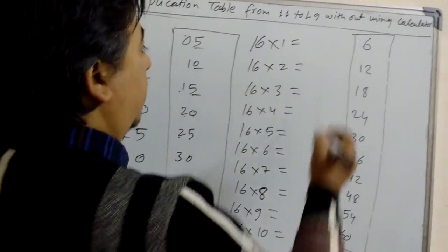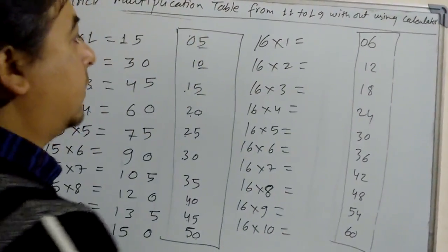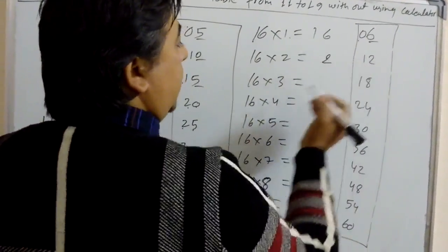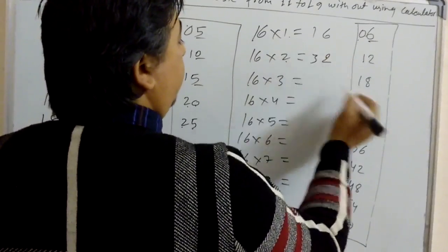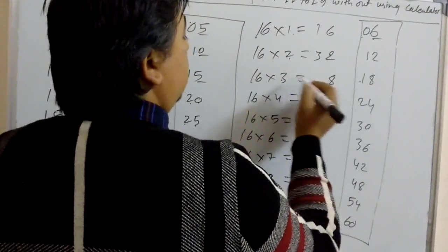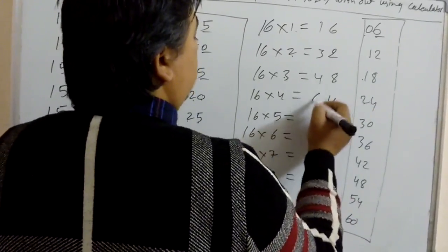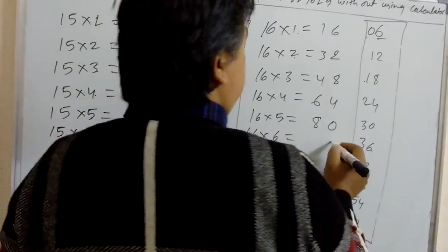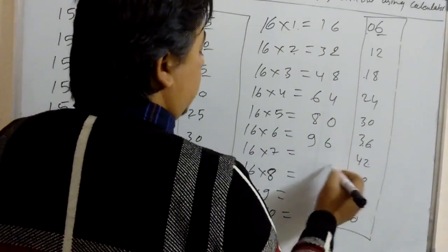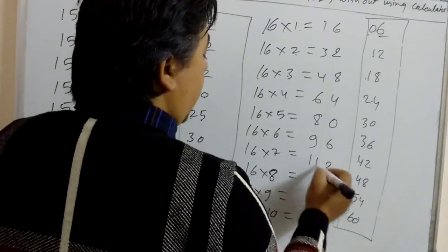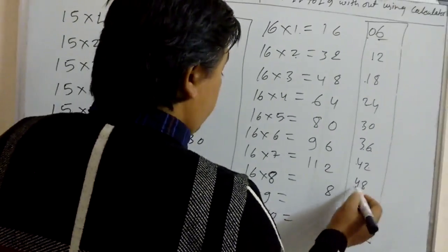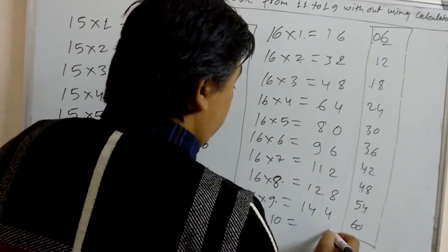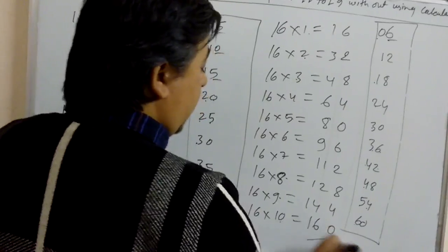Now see here — keep 0 in front to make double digit. Last digit same: 6. 0 plus 1 is 1. Last digit same, 1 plus 2 is 3. Last digit same, 1 plus 3 is 4. Last digit same, 2 plus 4 is 6. Last digit same, 3 plus 5 is 8. Last digit same, 3 plus 6 is 9. Last digit same, 4 plus 7 is 11. Last digit same, 4 plus 8 is 12. Last digit same, 5 plus 9 is 14. Last digit same, 10 plus 6 is 16 — so 160. In this way we can learn the table of 16.